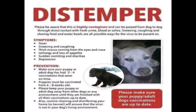In summary, canine distemper is highly contagious and can pass from dog to dog through direct contact with urine, blood, or saliva. Other routes include sneezing, coughing, and sharing food and water bowls. Segregate affected animals from healthy ones. Symptoms include fever, sneezing, coughing, thick mucus from eyes and nose, lethargy, loss of appetite, vomiting, diarrhea, depression, dehydration, and emaciation. Ensure puppies or adult dogs receive three to four timely vaccinations, starting from six to eight weeks old.